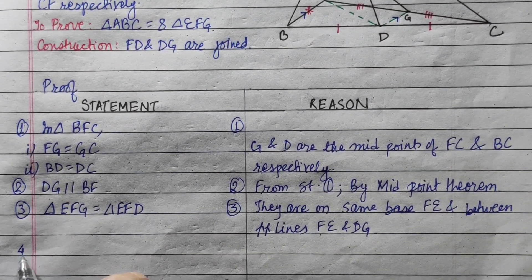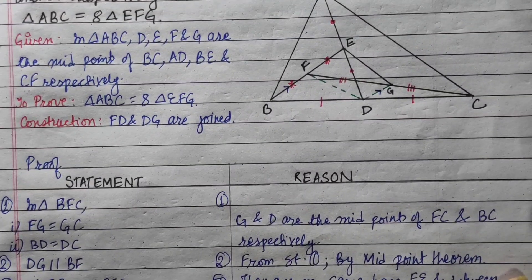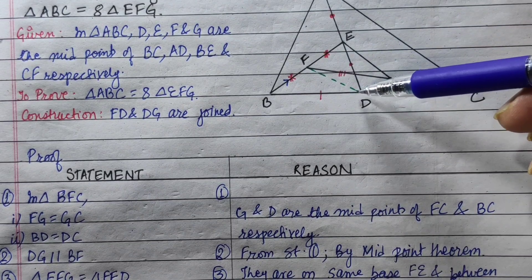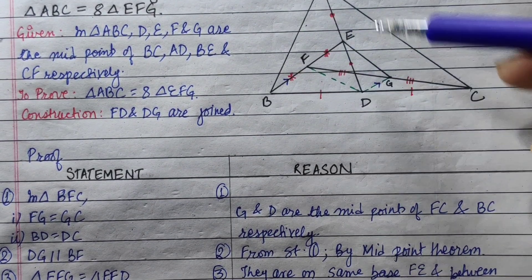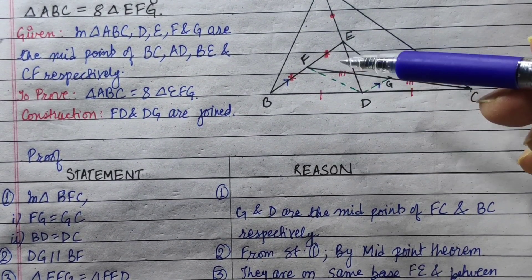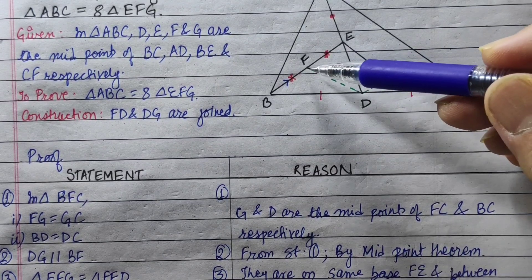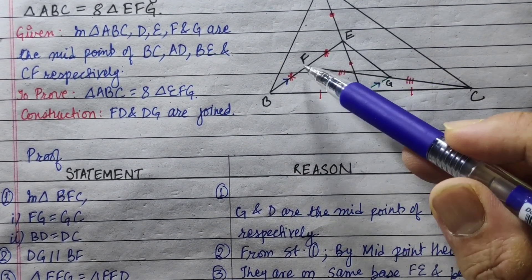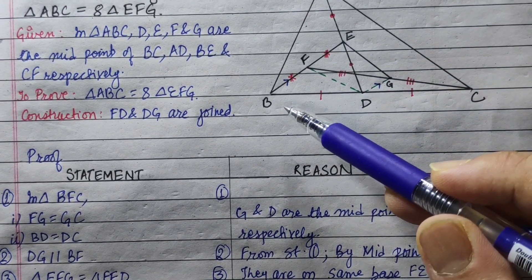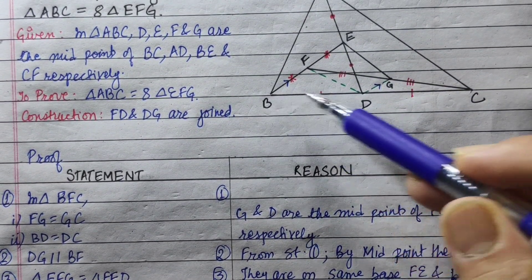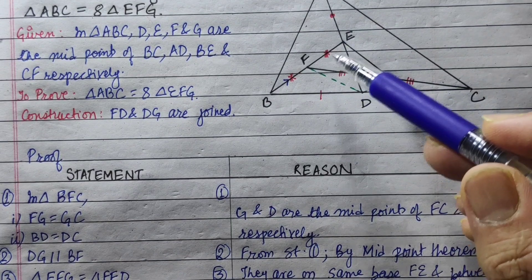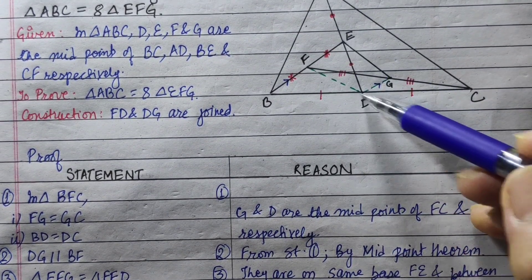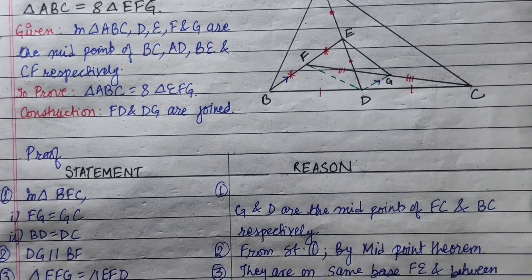In the same way, triangle EFD equals triangle BDE. Then triangle BDE is twice triangle EFD.